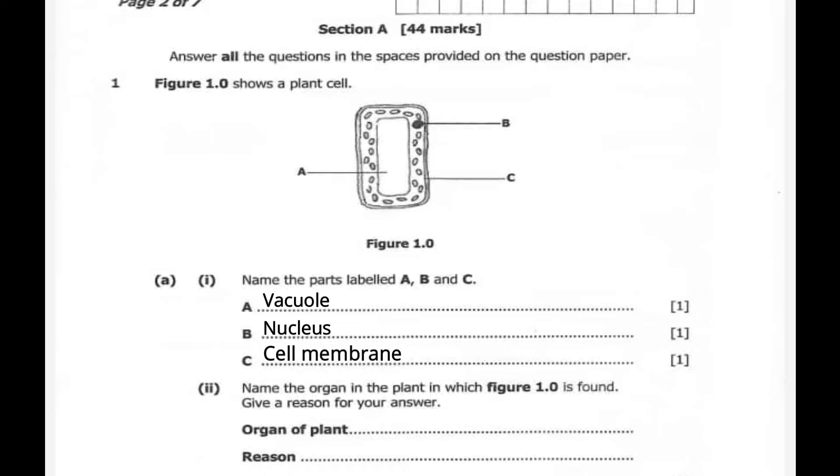Name the organ in the plant in which figure 1.0 is found. Name of the organ is a leaf. And why is it found in a leaf? It's because it has got a chloroplast.